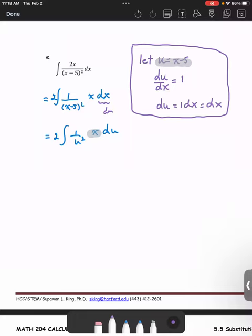That means u plus 5 equals x that we're going to use to replace the x term in the integrand part.